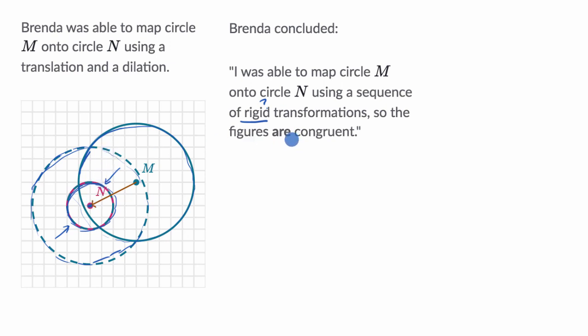In order for two figures to be congruent, the mapping has to be only with rigid transformations. So because she used a dilation, in fact, you have to use a dilation if you want to be able to map M onto N because they have different radii, well, then she's not correct. These are not congruent figures. She cannot make this conclusion.